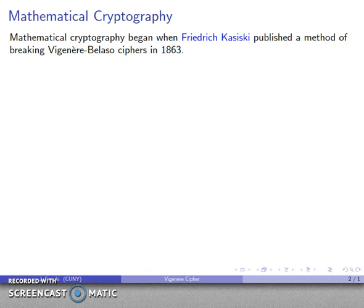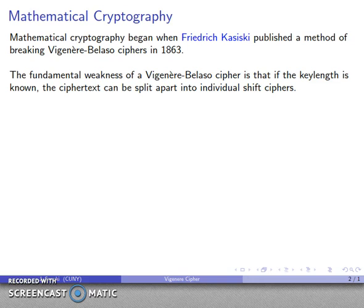A German cryptographer by the name of Friedrich Kasiski invented a method of breaking the Vigenère-Belaso ciphers in 1863. The fundamental weakness of such a cipher is that once you know the key length, you can take the ciphertext and split it apart into a bunch of individual shift ciphers.